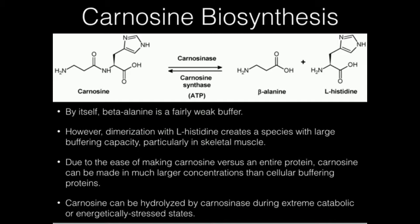Under biosynthetic conditions, we have beta-alanine and histidine — just normal L-histidine, the proteinogenic amino acid. An enzyme called carnosine synthase uses ATP to condense beta-alanine and histidine into carnosine. Carnosine is a dipeptide and is the main buffering component. Beta-alanine is a fairly weak buffer by itself; however, when it dimerizes with histidine, which is already a good buffer by itself, it's able to have a pretty large buffering capacity and protect against the pH effects of vigorously exercising skeletal muscle. That's carnosine's main function, and its production is through carnosine synthase.